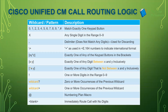So we have these particular wildcards — their pattern and description. Zero to nine, star, and dash means it should match exactly one keypad button. X means any single digit in the range zero to nine. Dot is a delimiter used to discard pre-dot digits in call party transformation. The plus sign is used in E.164 numbers to indicate international format.